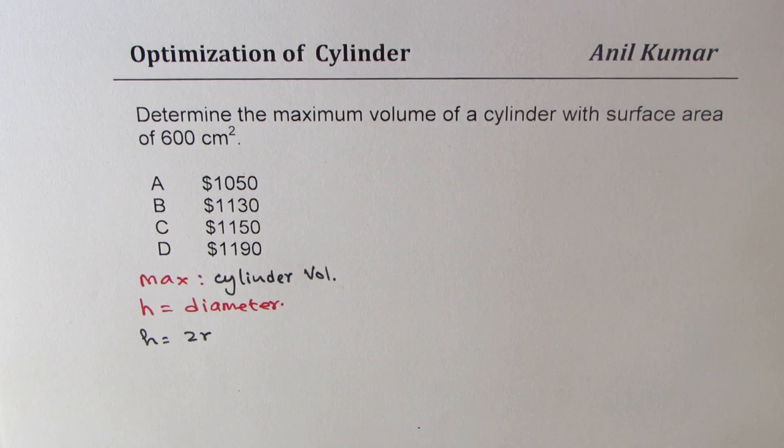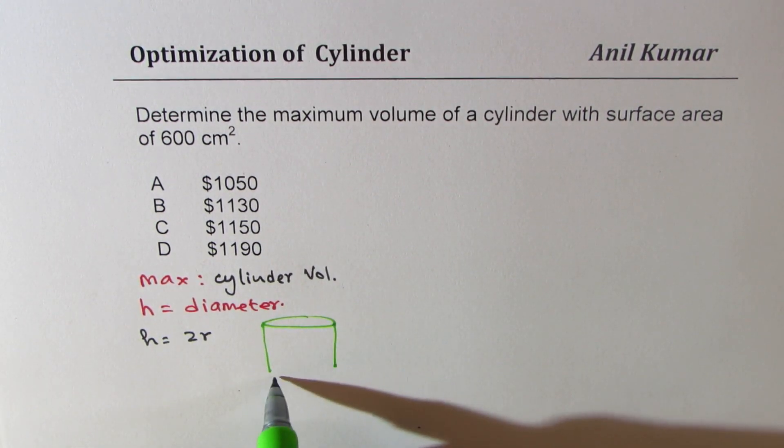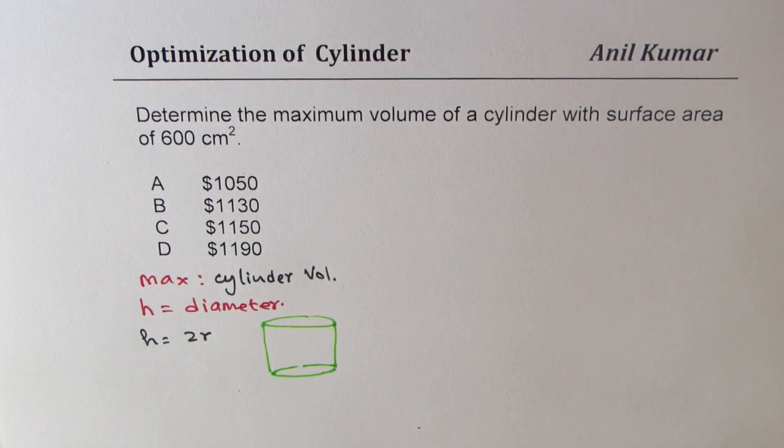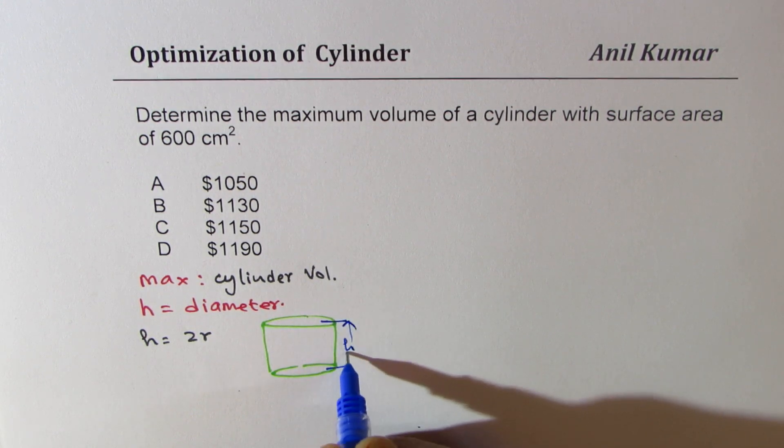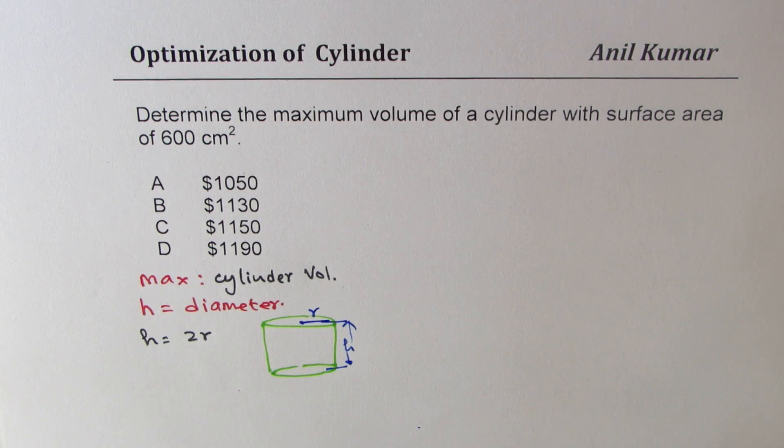So if I have a cylinder here, in that case, the height of the cylinder should be equal to twice radius. So that is the strategy which we are going to use to solve this particular question. Now we are given surface area.